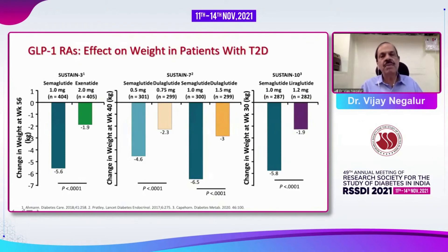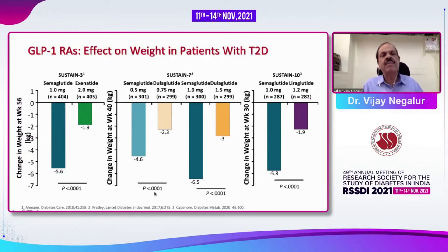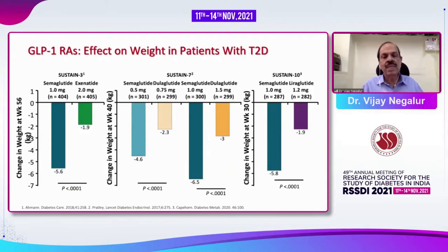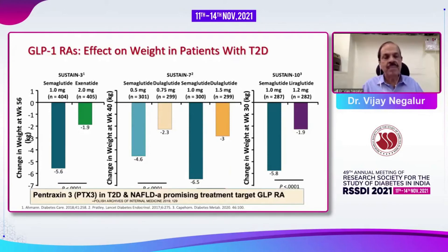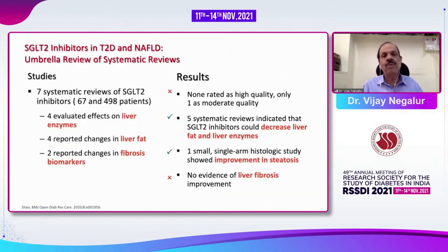GLP-1 receptor agonists are very interesting molecules because they bring significant weight loss. SUSTAIN-3, SUSTAIN-7, and SUSTAIN-10 studies show weight loss of up to 6.5 kg in patients compared with exenatide BID. Pentraxin-3, a biomarker for heart failure in diabetic patients, has also been shown to be reduced when using GLP-1 receptor agonists.